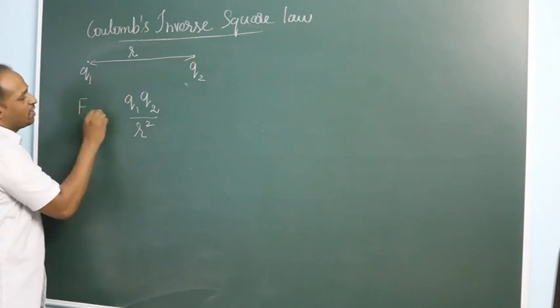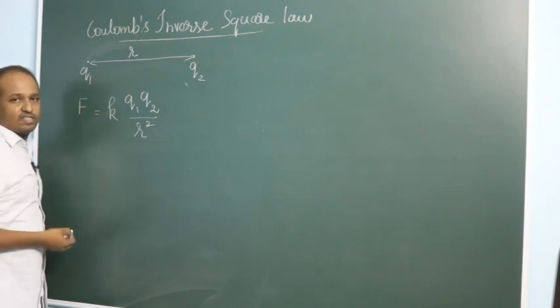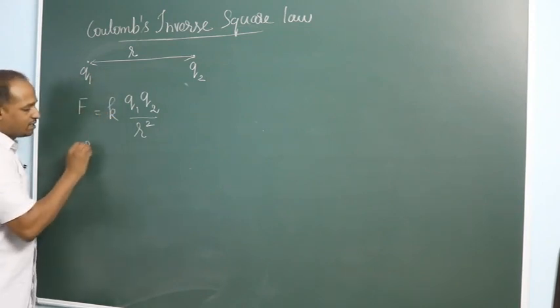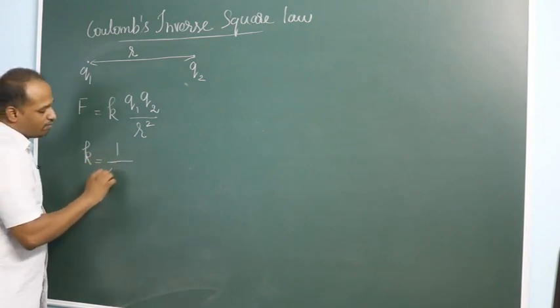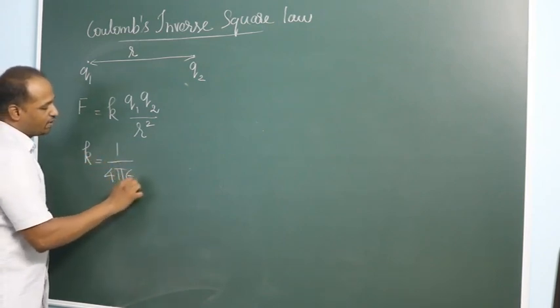If you remove this proportionality, you will have to introduce a constant K. In SI system, the constant K is written as 1 by 4 pi epsilon naught.